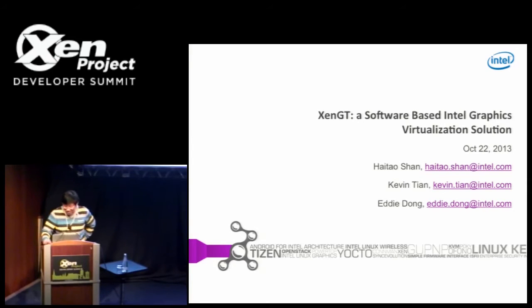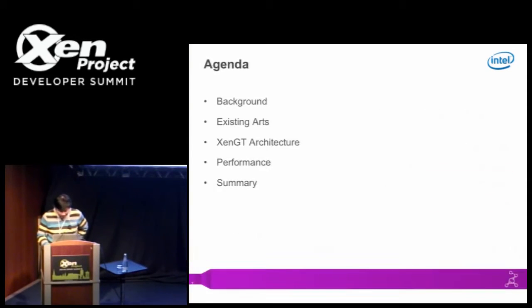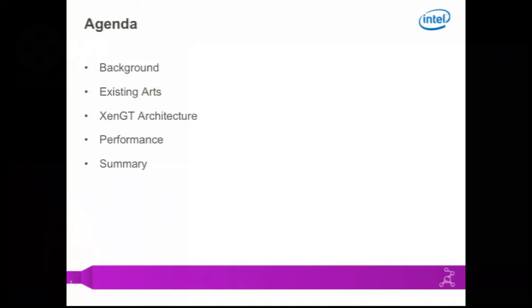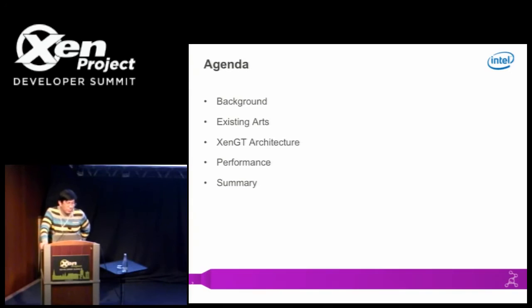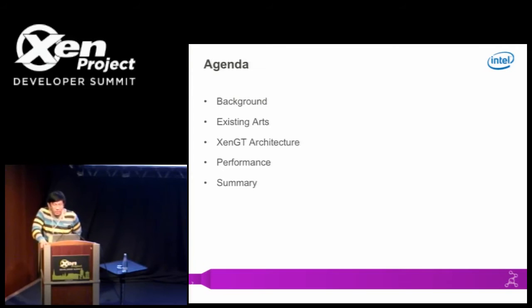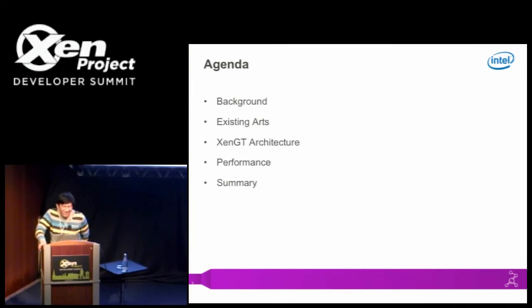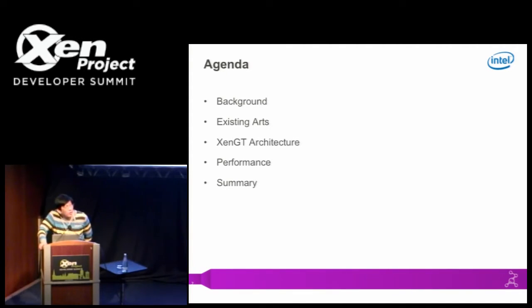For the agenda: first, I will give you some background on why we need graphics virtualization in a virtual machine. Then we will quickly go through the existing approaches and compare them. After that, we will propose our XenGT architecture, followed by some performance data and a summary.